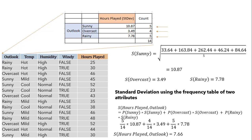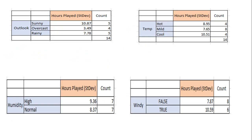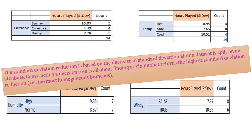We will find the standard deviation for the remaining three columns — temp, humidity and windy — by following the same steps used for the outlook column. Once we have calculated standard deviation for all four columns with respect to the target variable, the dataset will be split on different attributes. For that, we subtract the resulting standard deviation from the standard deviation before the split. This whole process is known as standard deviation reduction.